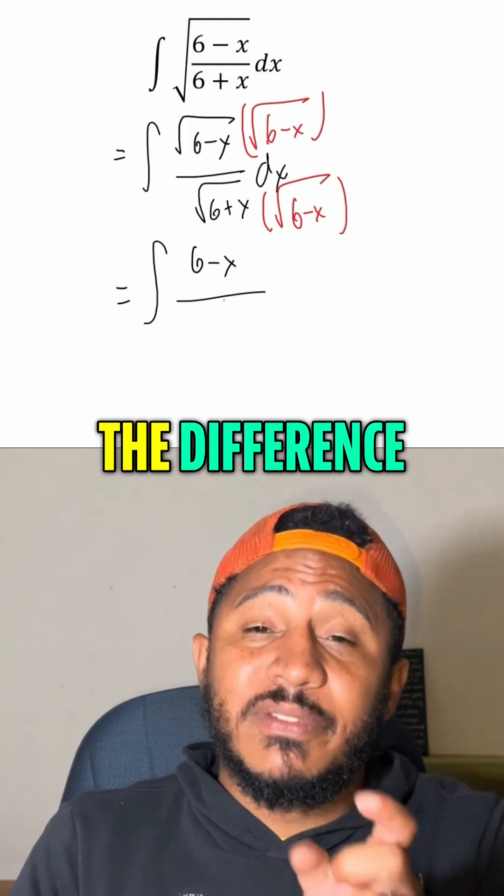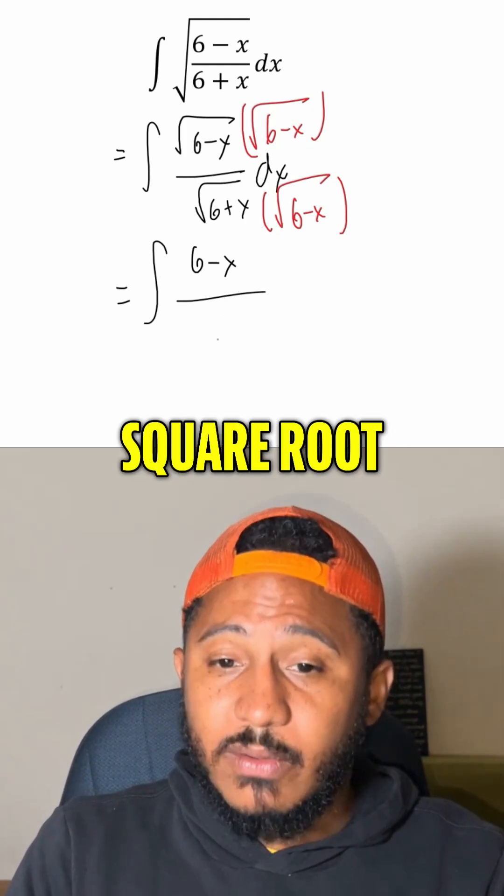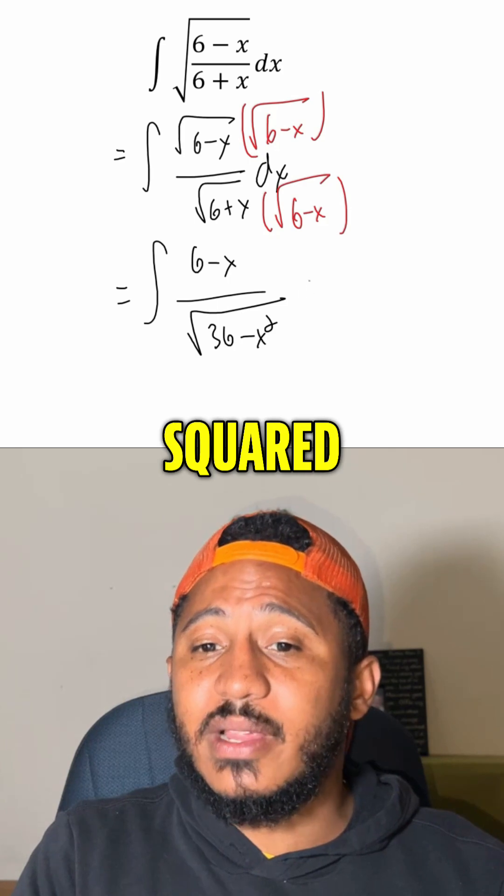And then the denominator, this becomes the difference of squares on the inside of that square root. So we get the square root of 36 minus x squared.